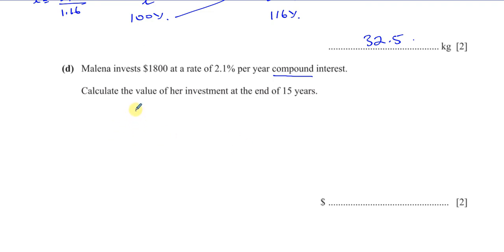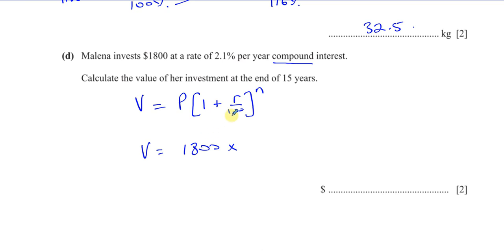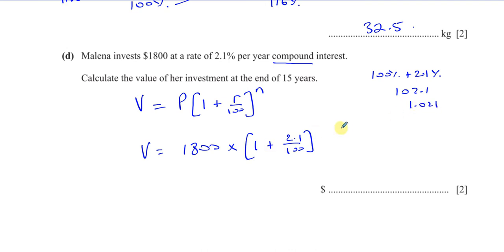With compound interest, the amount at the end of each year keeps being raised by 2.1% for 15 years. The formula most people use is: value equals principal times (1 plus r over 100) to the power of n, where r is the rate and n is the number of years. Here r is 2.1 and n is 15. 1 plus 2.1 over 100 gives 1.021, and the investment is increased by 2.1% fifteen times.